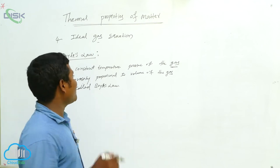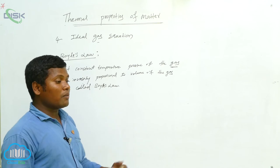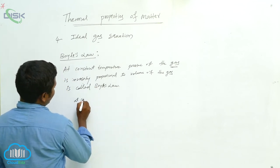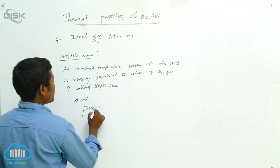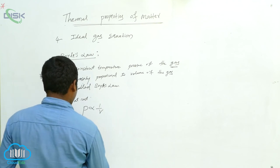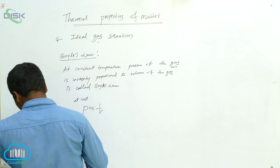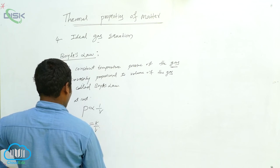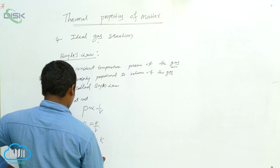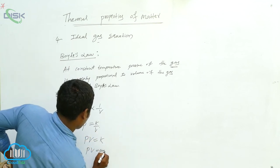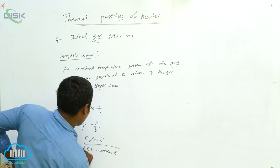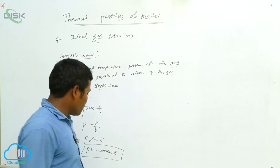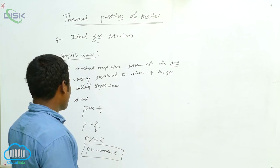Boyle is a scientist's name. He stated: at constant temperature, pressure is inversely proportional to volume. So at constant T, P is proportional to 1/V. Removing the proportionality, we introduce a constant K, giving P equals K divided by V. Therefore, PV equals K, which means PV equals constant. This is Boyle's law — if you can prove PV equals constant, that is Boyle's law. Remember this statement, as we will use it to solve problems.